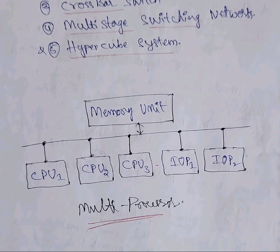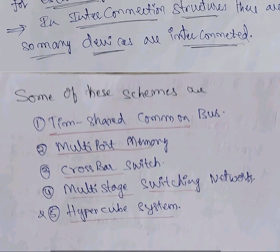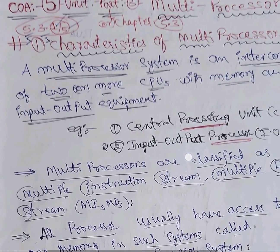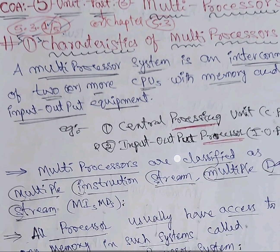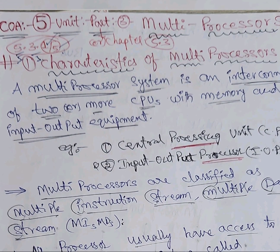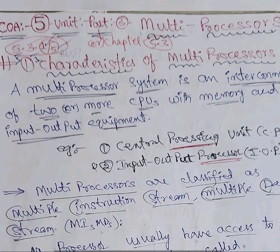With a diagram: multiple processors means many processors, and these are the characteristics. This may come as a short question or SM question in the exam. Fifth unit, third chapter — multiple processors means many processors. All the best for your exam.